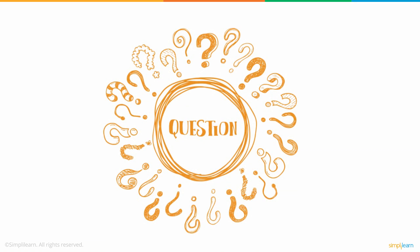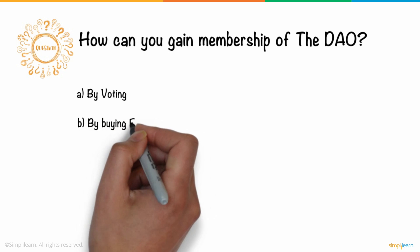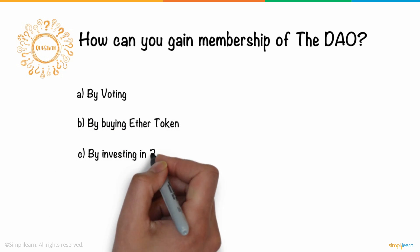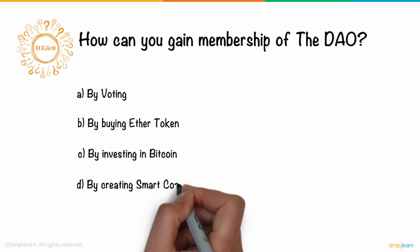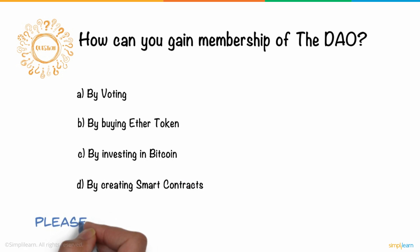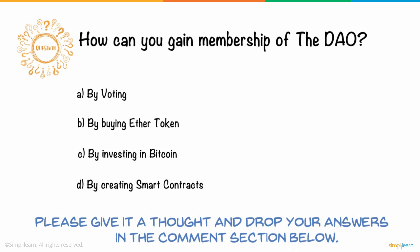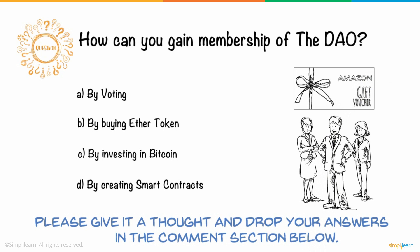Here is a question for you: How can you gain membership of the DAO? A. By voting. B. By buying an Ether token. C. By investing in Bitcoin. D. By creating smart contracts. Please give it a thought and drop your answers in the comments section below. Three lucky winners will receive Amazon gift vouchers.